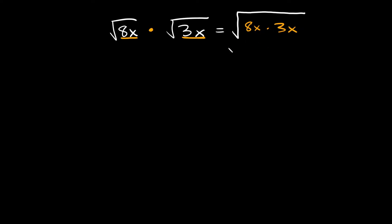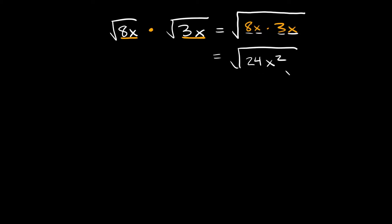Now we can start simplifying this a little bit, basically just combining like terms. Here we have 8 times 3, and 8 times 3 is equal to 24. And here we have x and an x, so x times x is equal to x squared. So 8x times 3x is equal to 24x squared. Now that we've multiplied everything together, we can start simplifying.